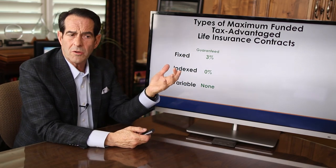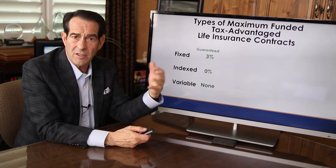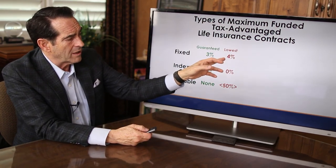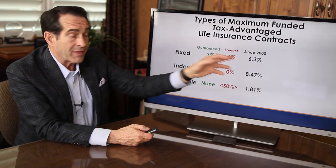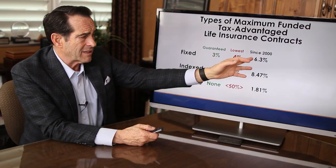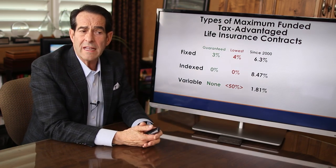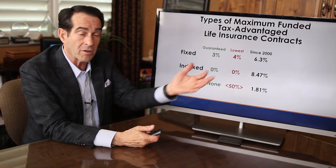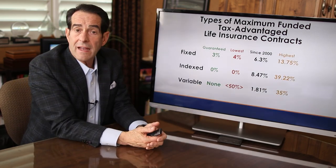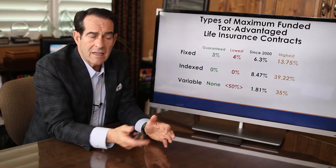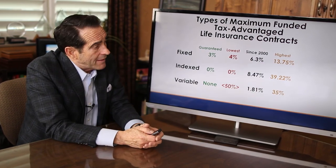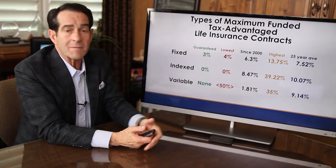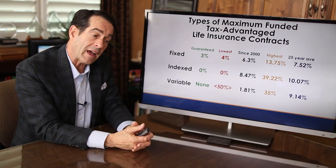With fixed, they'll guarantee you maybe 3% — that's the lowest you will earn. I've usually earned no less than 4% even though the guarantee is 3. The highest I earned on fixed was back in 1980 to 1990 — about 13 and three-quarters percent. Since the year 2000, I've only averaged about 6.3% on fixed, essentially paying me what interest they're earning minus about 1% for costs. Over 25 years, I probably averaged about 7.52% — tax-free.